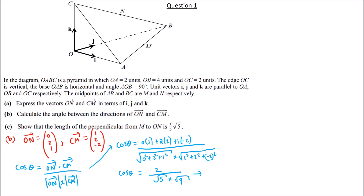So θ = cos⁻¹(2 / (√5 × 3)) = cos⁻¹(2 / (3√5)). Evaluating, θ ≈ 72.7 degrees, correct to one decimal place.